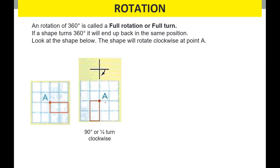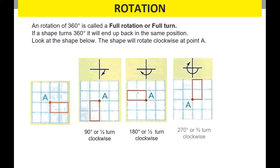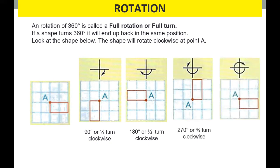So 90 degrees because it started from here. Then clockwise for a full turn — we will do 360 degrees. So now it's at half, then 270, and it returned back to the origin because it's a full rotation.